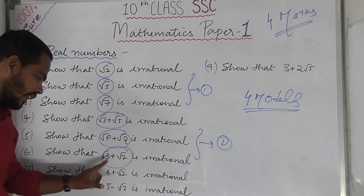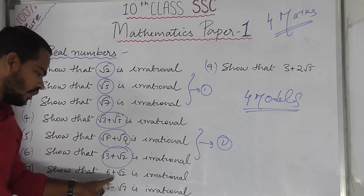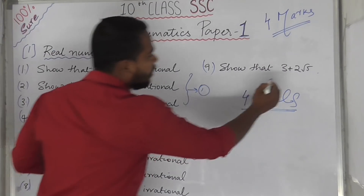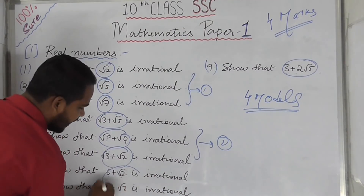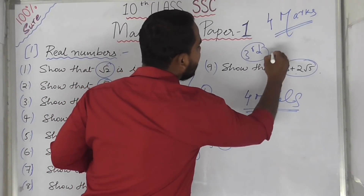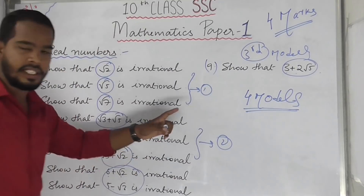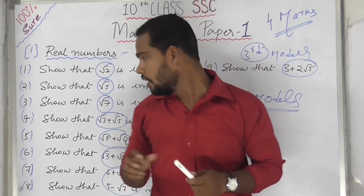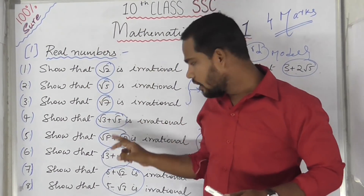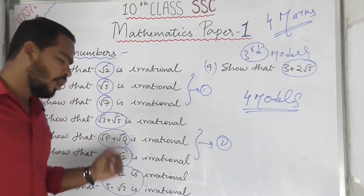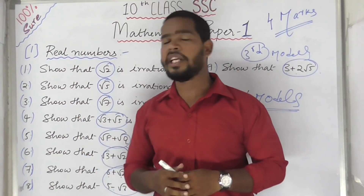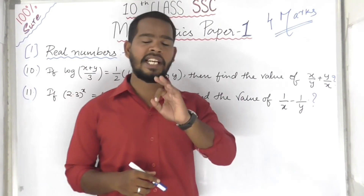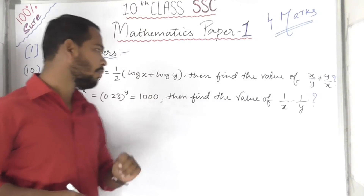The third model: find the real number value. Examples are 6 plus root 2, 5 minus root 3, root 3 plus 2 root 5. You need to remember: single root, double root — for the single root and normal value, these are the third model important questions.